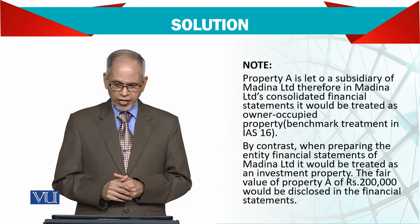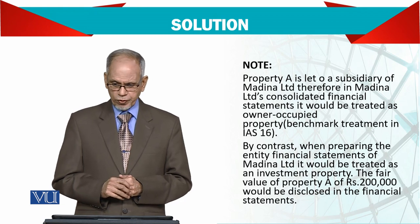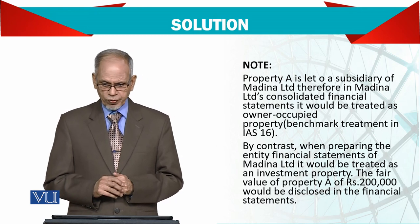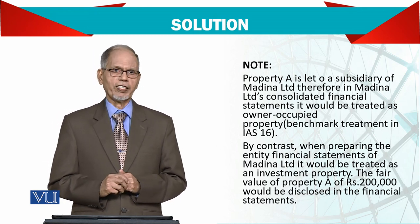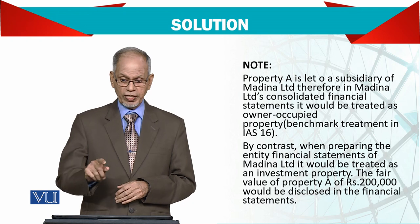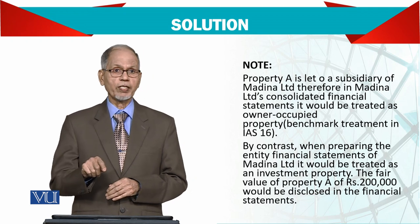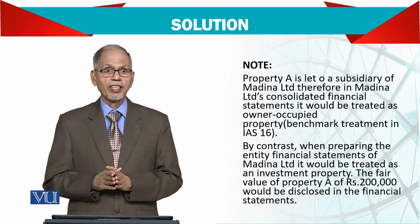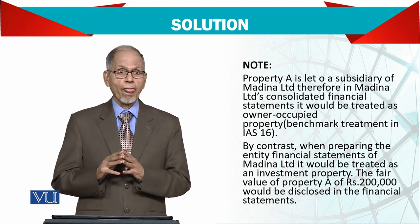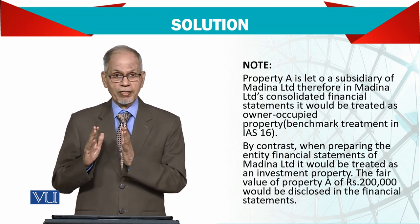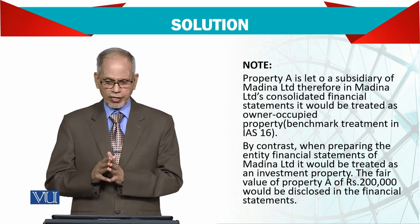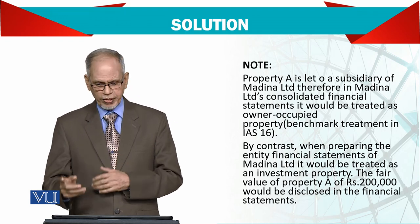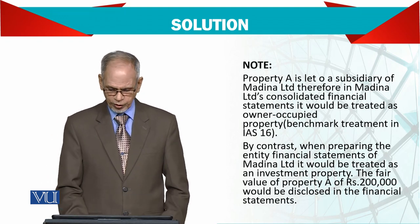The fair value of the property of 200,000 would be disclosed in the financial statements. In this particular case, because it is owner-occupied property, it should be separately disclosed.